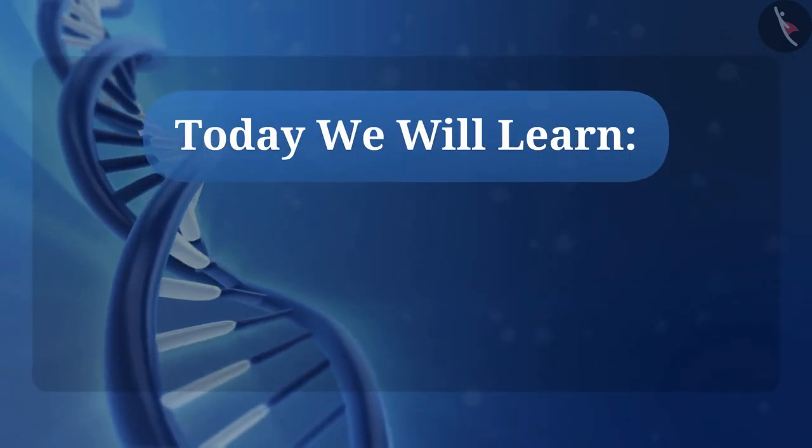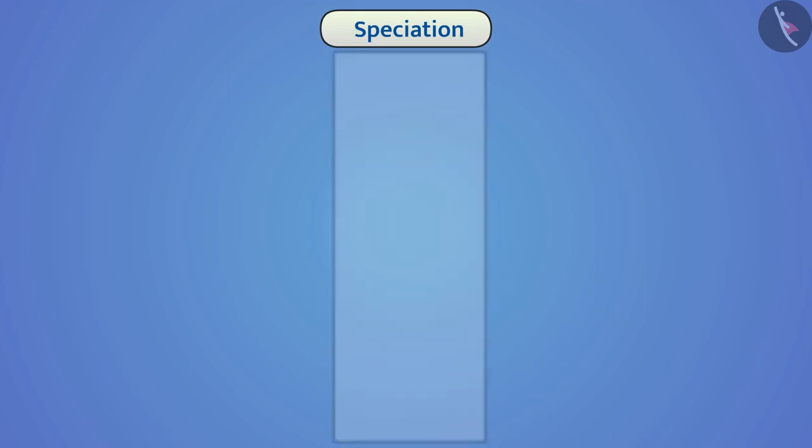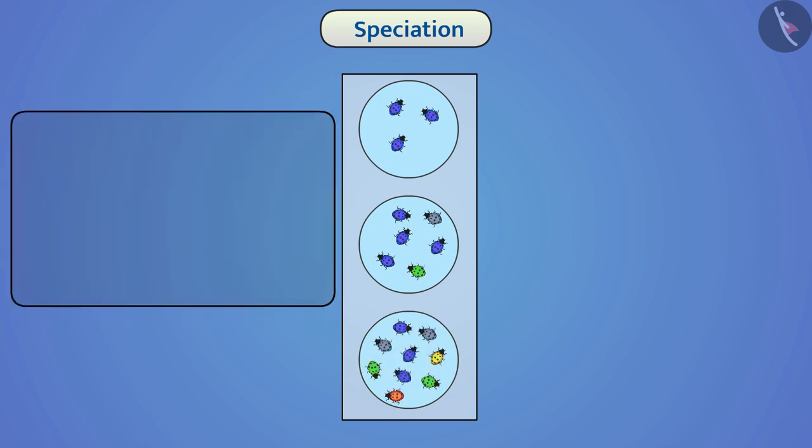Today we will learn about speciation. We know that during sexual reproduction, the offspring inherits traits of the parent and also inherits some variations. Due to these variations, there are developments of certain characters in the organism which are different from that of parents.